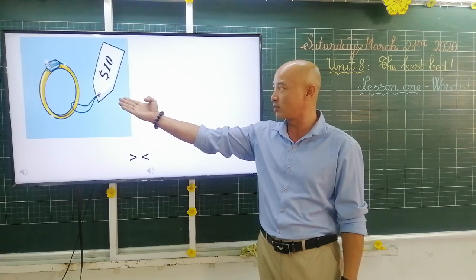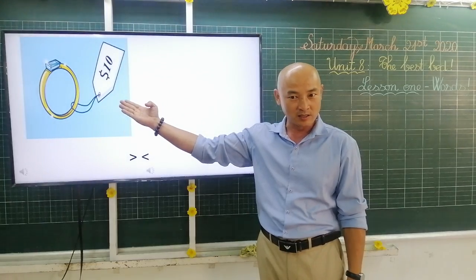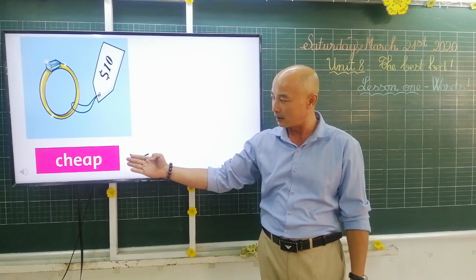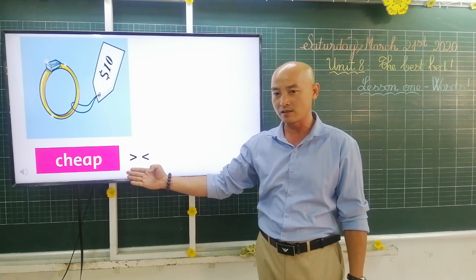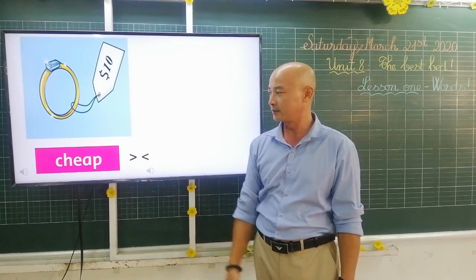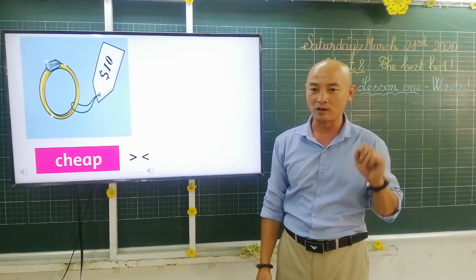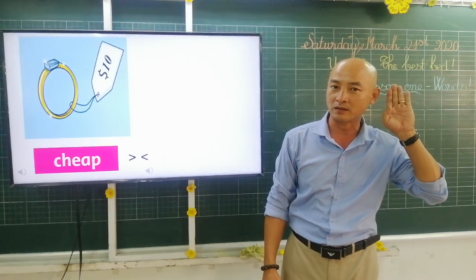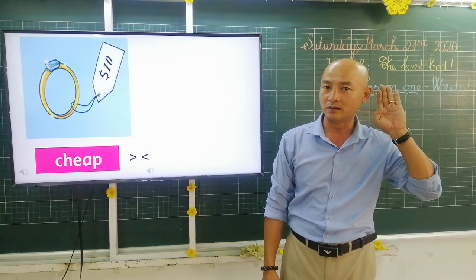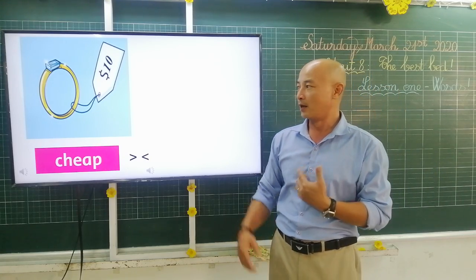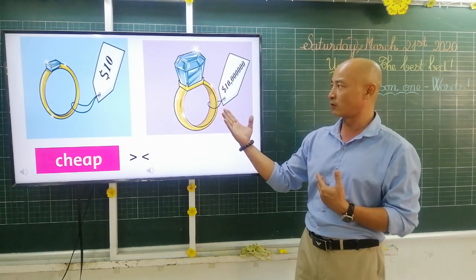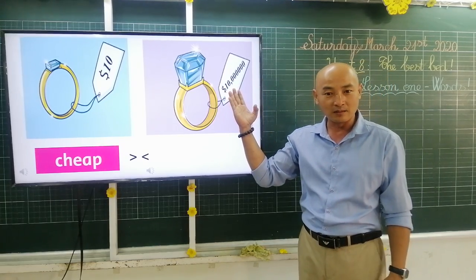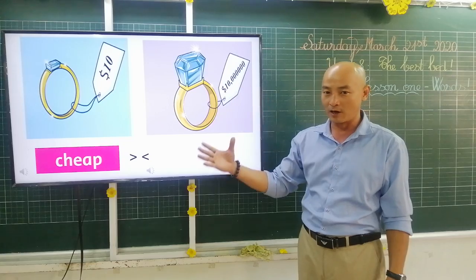The first one — you can see the picture. This thing is just ten dollars. Now you can listen and repeat: cheap. Once more: cheap. Okay, now it's your turn: cheap. Okay, that's good. And another word — this thing costs many dollars.